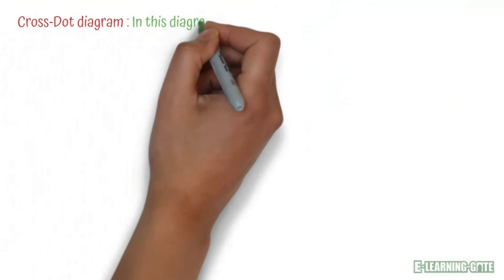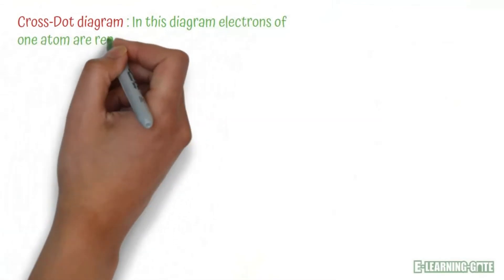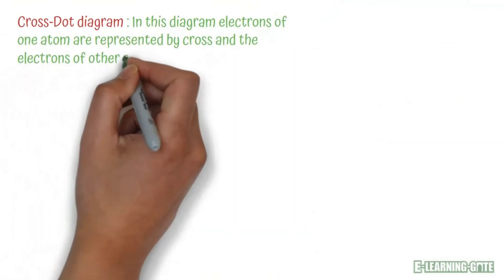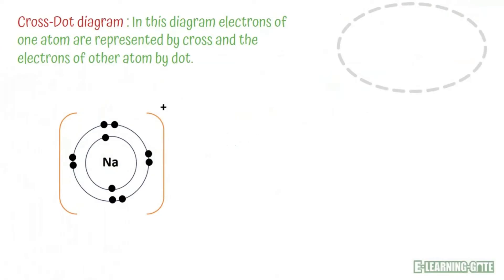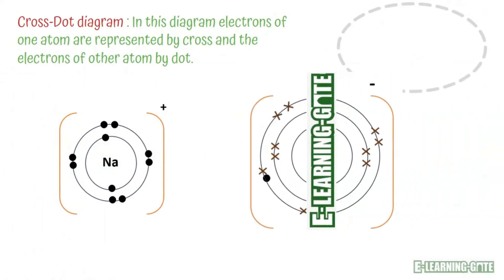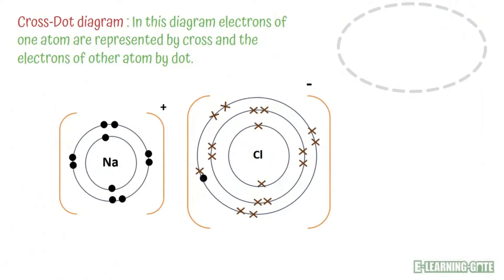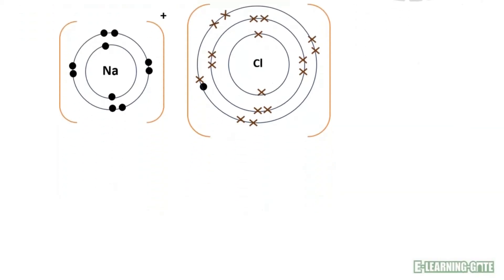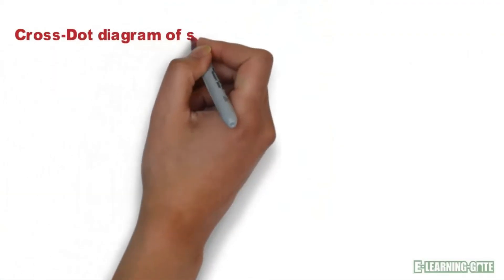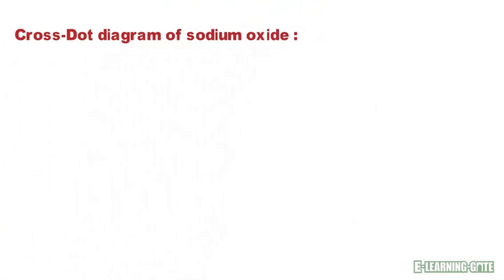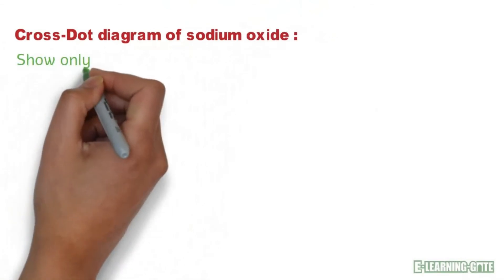Now let us try to understand a cross and dot structure. In this structure electron of one atom is represented by cross and of the other atom by dot. Let us see cross and dot diagram of sodium oxide. In this diagram we will show only valence shell electrons.